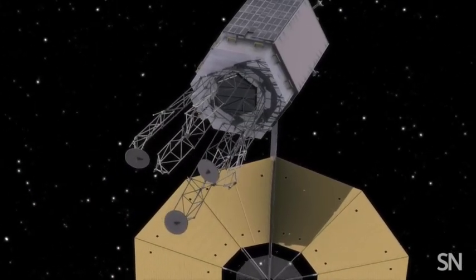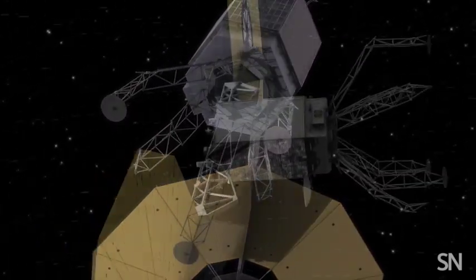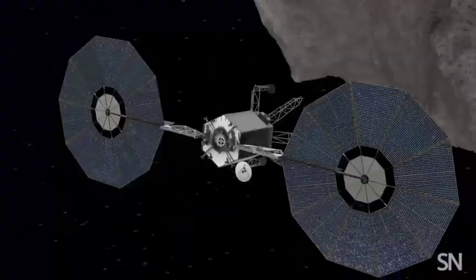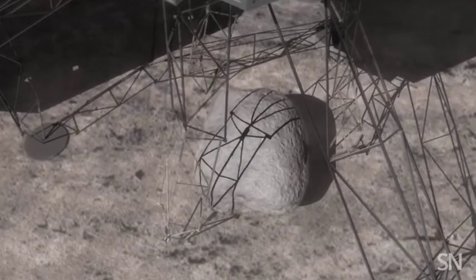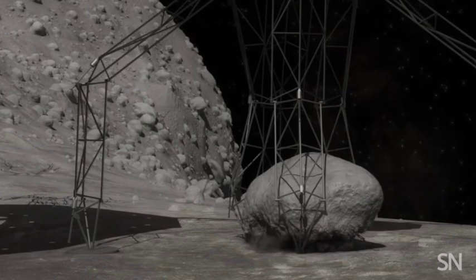NASA's second proposed plan to nab a space rock involves a robot with some combination of arms, legs, and possibly thousands of little hooks. This robot will be designed to snatch a golf-cart-sized boulder off the target asteroid and shuttle it to the moon.